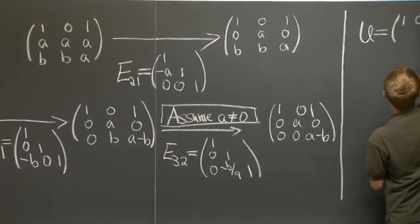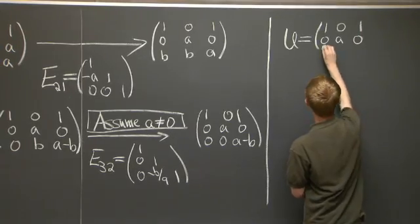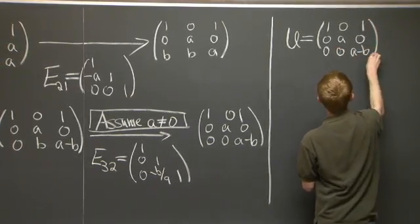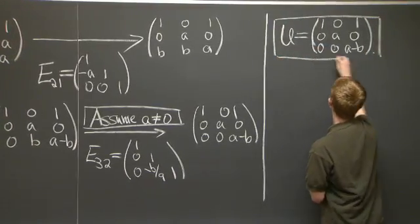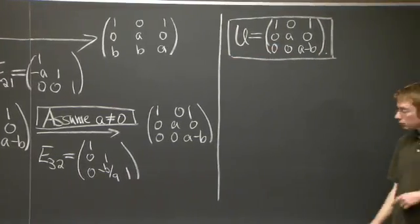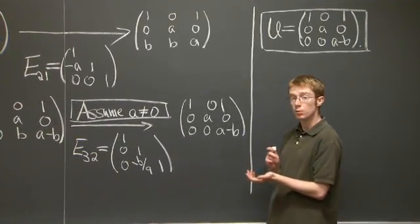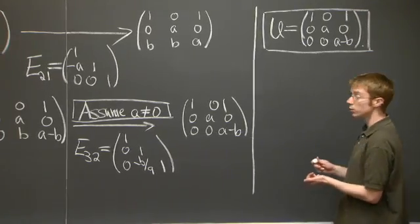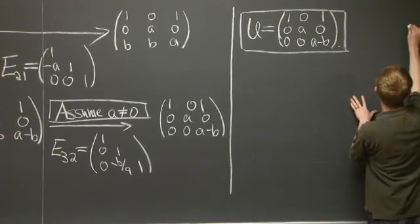1, 0, 1, 0, a, 0, 0, 0, a minus b. Now we have to find our L matrix, and we need to use these elimination matrices that we've been recording along the way in order to do that.